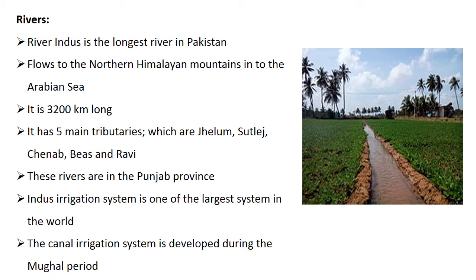The Indus irrigation system is one of the largest irrigation systems in the world, providing irrigation to cultivate many acres of land in Punjab and Sindh. Irrigation means to give artificial water for the cultivation of crops, as you can see in the picture. The canal irrigation system was developed during the Mughal period. Construction of barrages, dams, and a network of canal systems began during British rule and was completed after the partition.